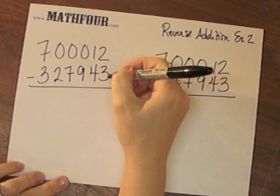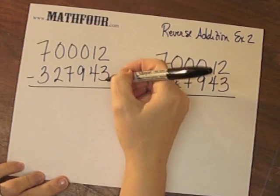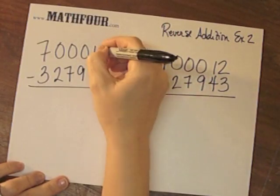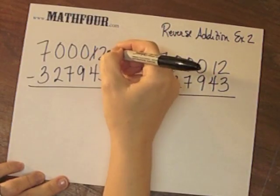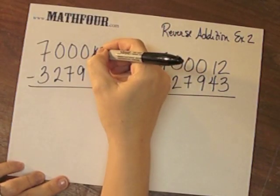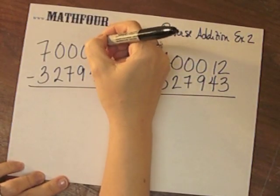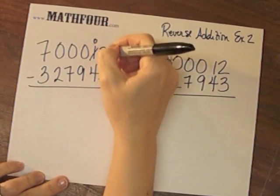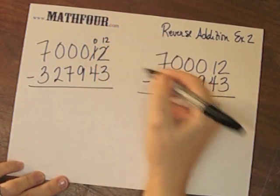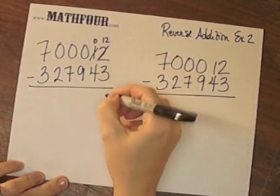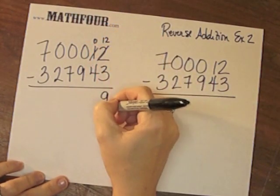So 2 can't subtract 3, so I need to borrow. So this becomes a 0, and this becomes 12. So 12 minus 3 is 9.